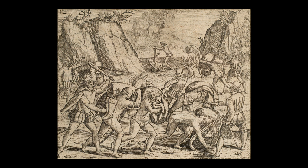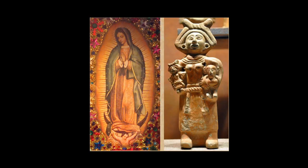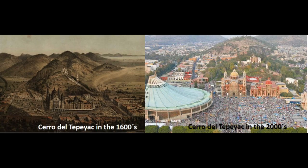A prime example of this is La Virgen de Guadalupe, the Virgin of Guadalupe — one of the biggest religious symbols of the Americas. Every December 12th in Mexico, the Virgin of Guadalupe is celebrated. According to legend, on December 9th, 1531, she appeared before Juan Diego on the Hill of Tepeyac, located north of Mexico City. The Virgin ordered Juan Diego to go to the Archbishop Fray Juan de Zumárraga, the highest religious authority in Mexico at the time, to build a temple on the hill in her honor.